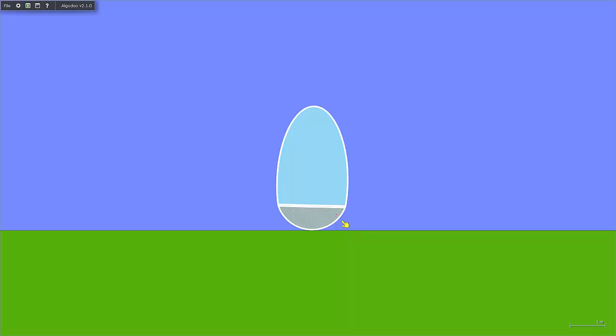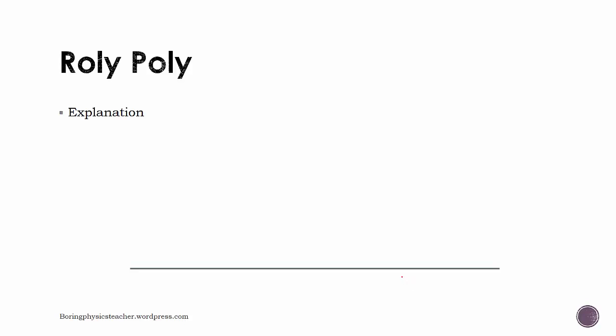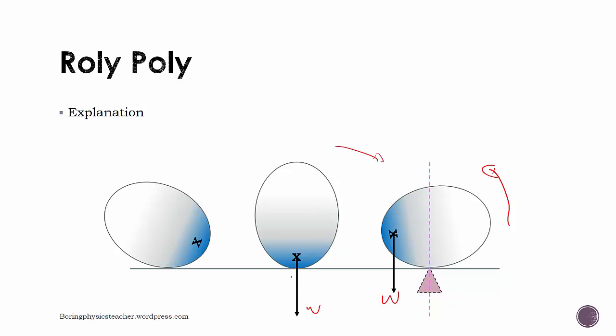So why is it that if you have something that's very heavy at the bottom and light on top and spherical in shape, this would happen? Explanation: This is a simplified diagram where X is the center of gravity of the rolly polly. If you tilt it to the right side, the center of gravity would be like this, and this will be the weight.